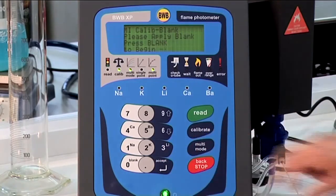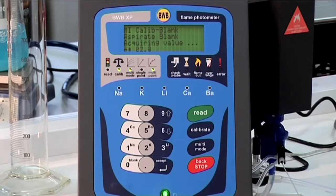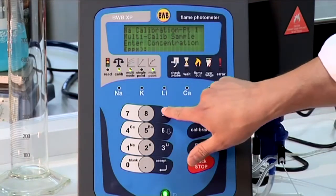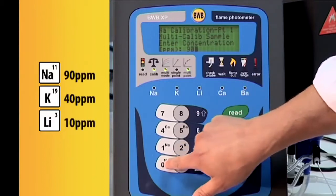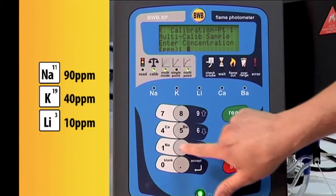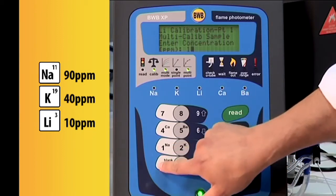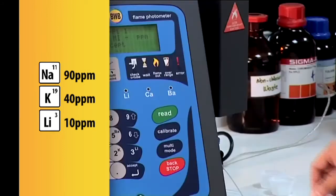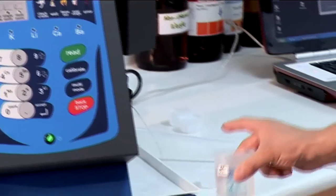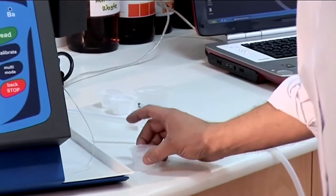Run the blank as before. We are now prompted for standard 1: sodium, enter 90; potassium, enter 40; and lithium, enter 10. Aspirate standard 1 and key accept.